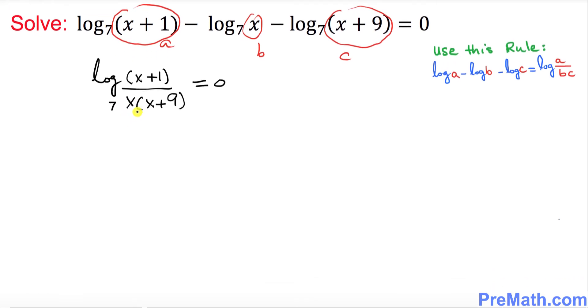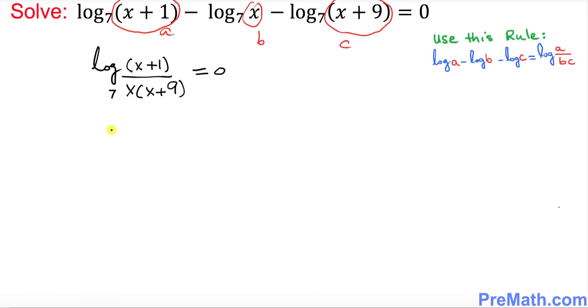Let's go ahead and distribute the denominator, so I can write log of (x+1) on the top, and once you distribute x, x times x becomes x squared plus 9x with a base seven equal to zero.